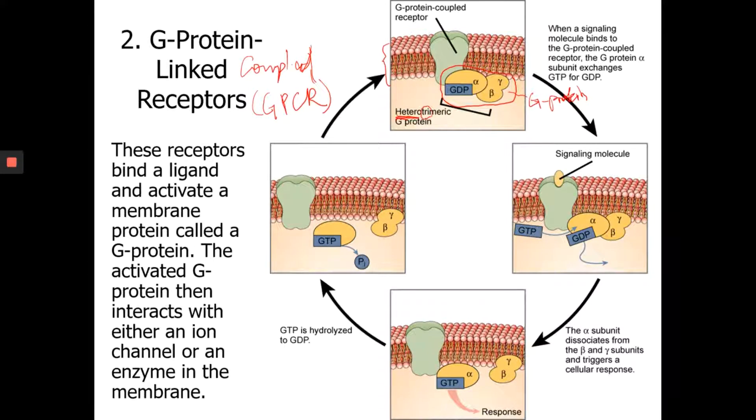Now one thing I need to point out before we go through the process. So you see this G-protein has a GDP. If you remember that when we talk about active transport, we mentioned ATP and ADP. So which one carries a lot of energy? The ATP.